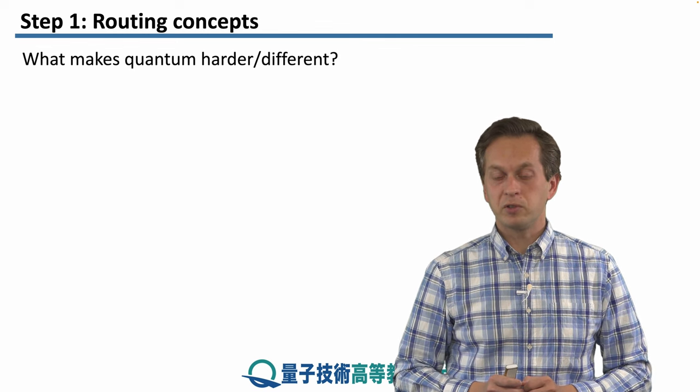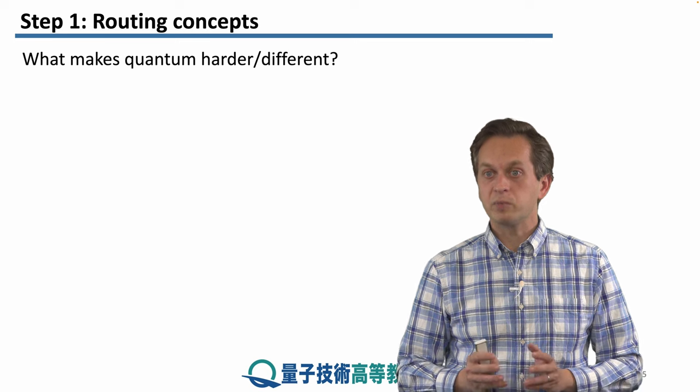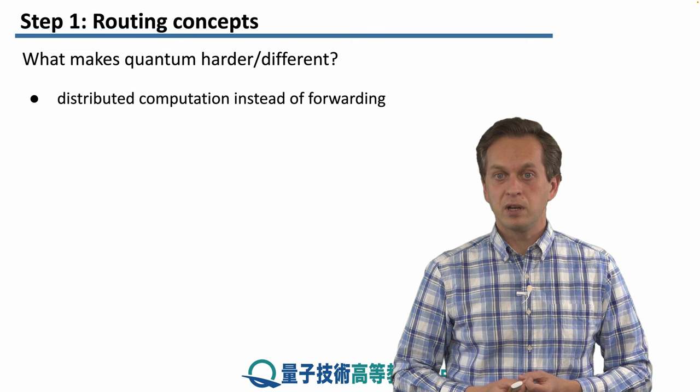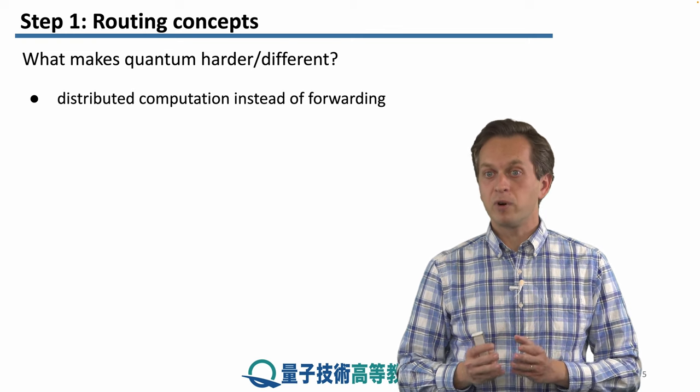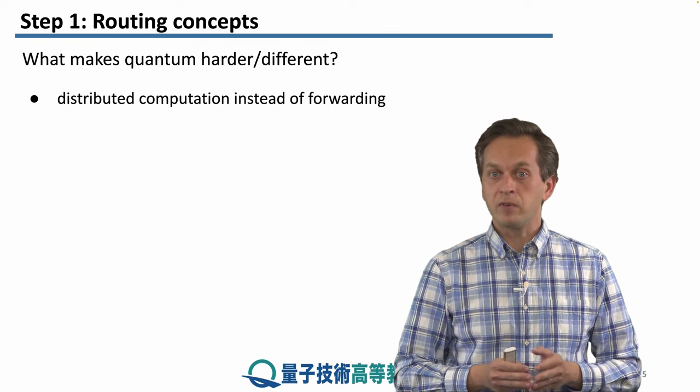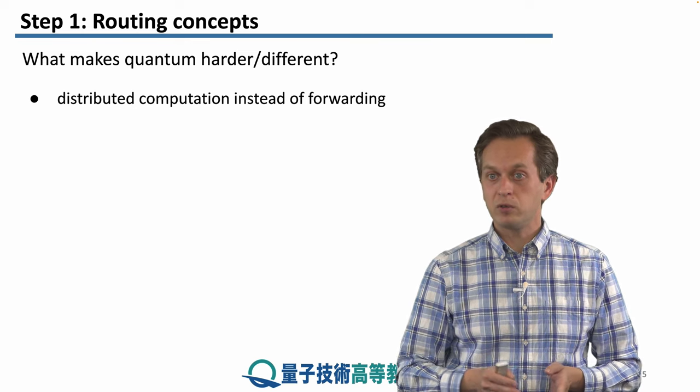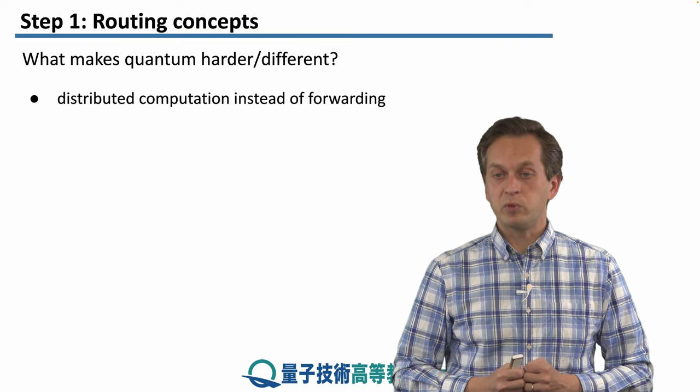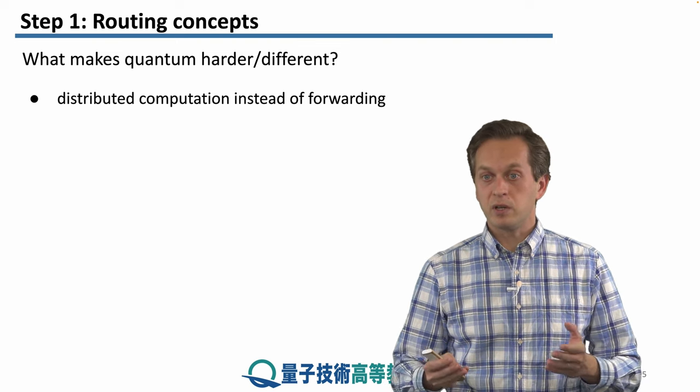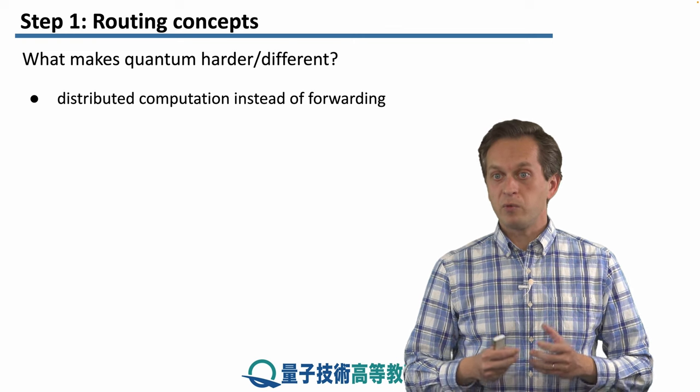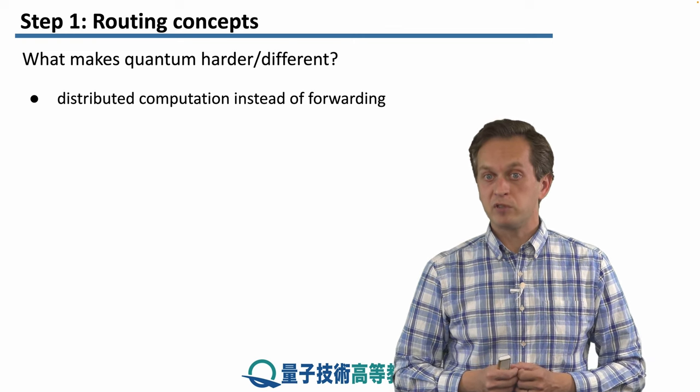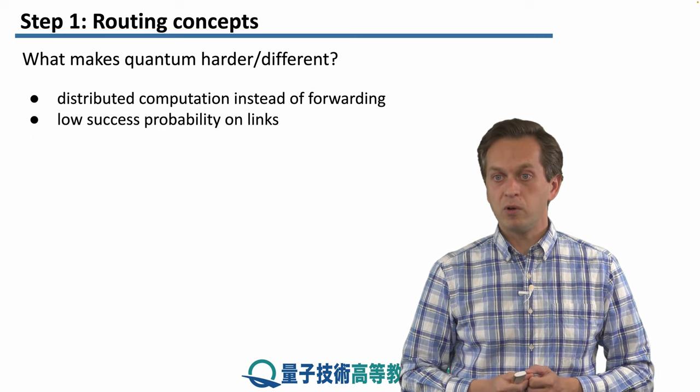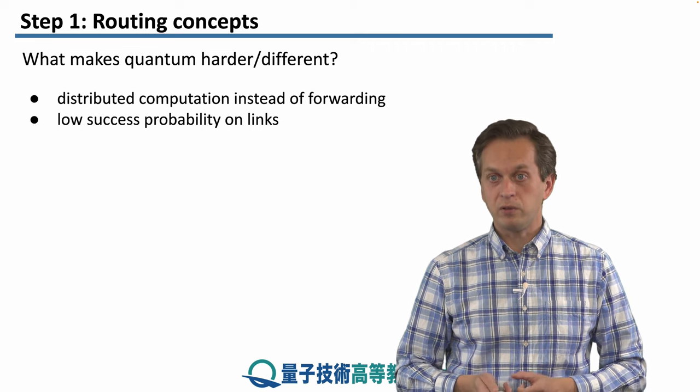Now, what makes quantum routing different or what makes it harder? Number one is that classical networking and quantum networking are quite different. Classical networking is about forwarding packets or classical routing is about forwarding packets from one node to the other. We saw this when we are establishing link level entanglement, when we are thinking about error management in terms of purification. Also, the success probability for quantum links is very, very low, and we have to contend with that.